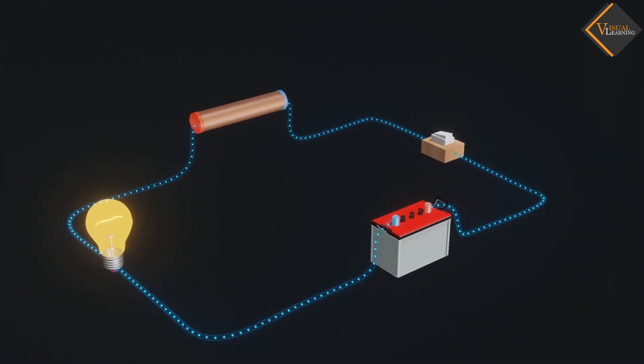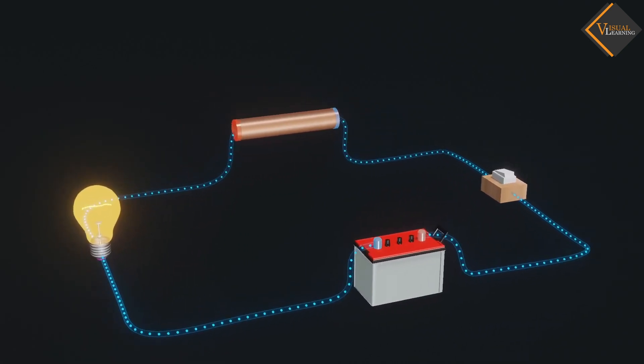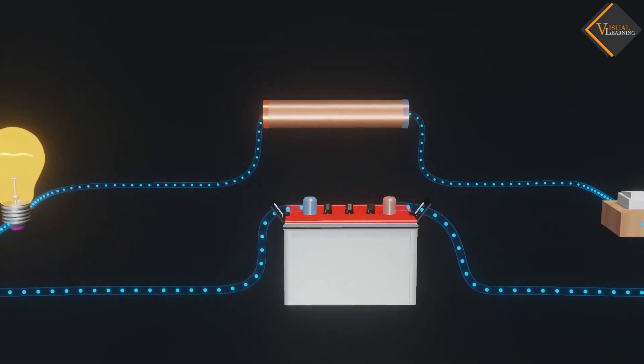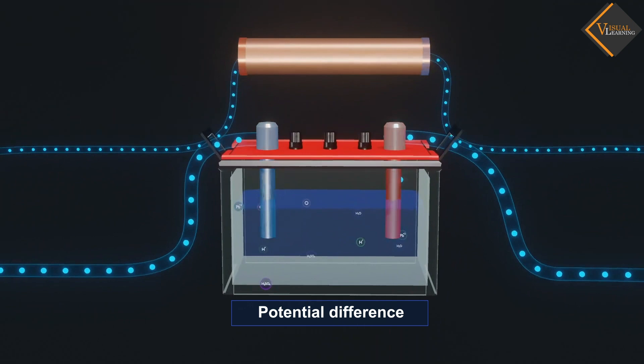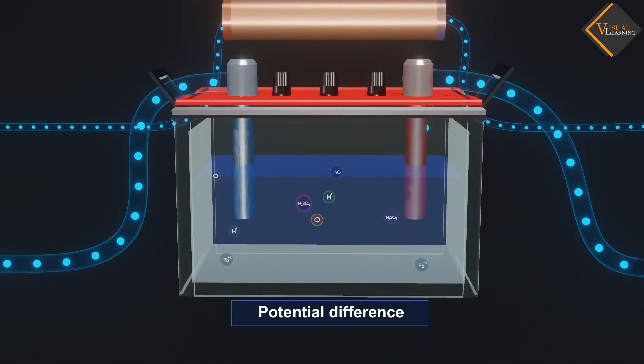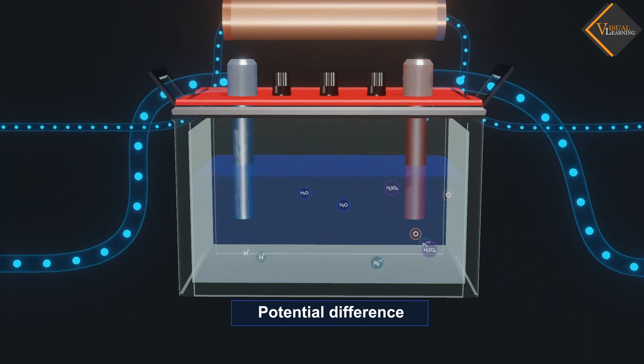We know that a battery or cell is a source of electrical energy. The chemical reaction within the cell generates the potential difference between its two terminals. This potential difference sets the electrons in motion to flow the current through a resistor connected to the battery.